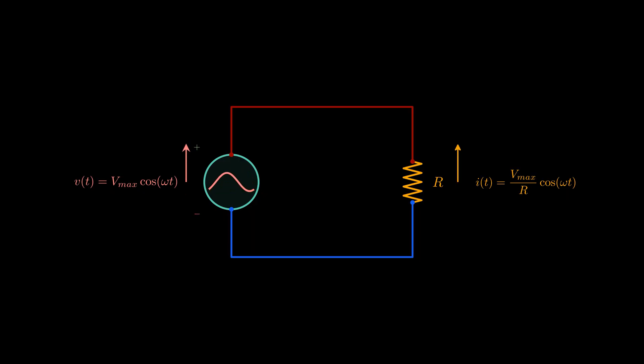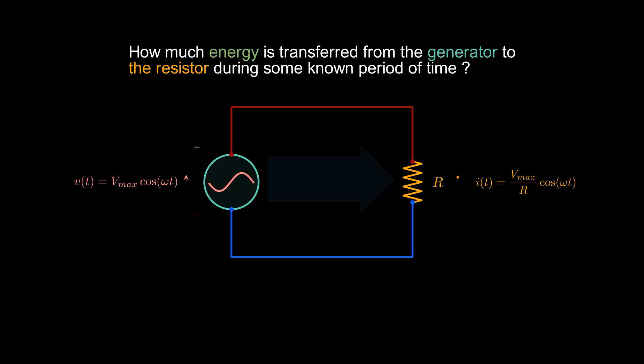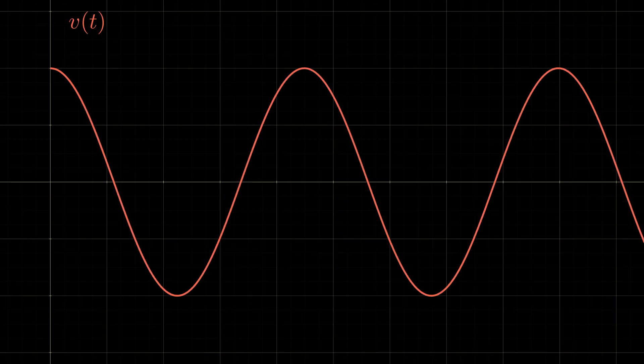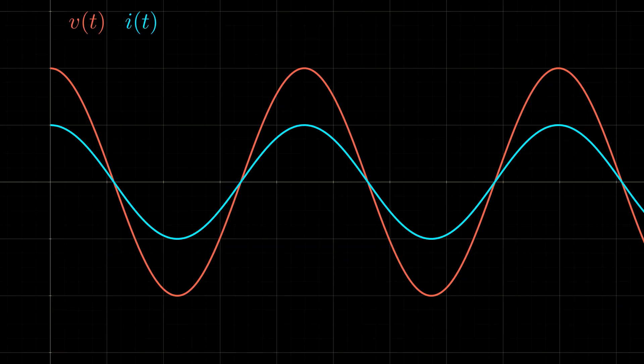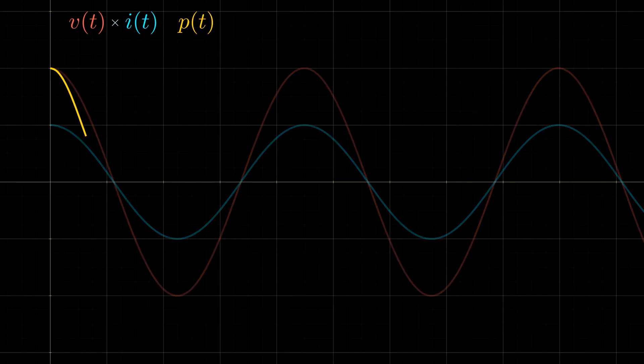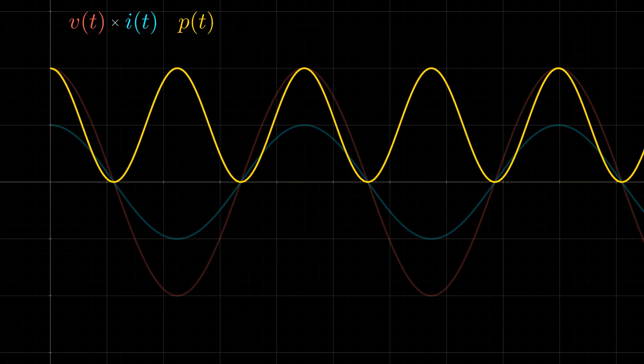So our question here is how much energy is transferred from the generator to the resistor during these cycles? Let's start by plotting both voltage and current of the resistor. As we just saw, these two variables are two in-phase sinusoidal functions. Power at any instant is the multiplication of voltage and current. And because they are in phase, they always have the same sign, either both positive or both negative. So power will always be a positive sinusoidal function with double the frequency of current and voltage.